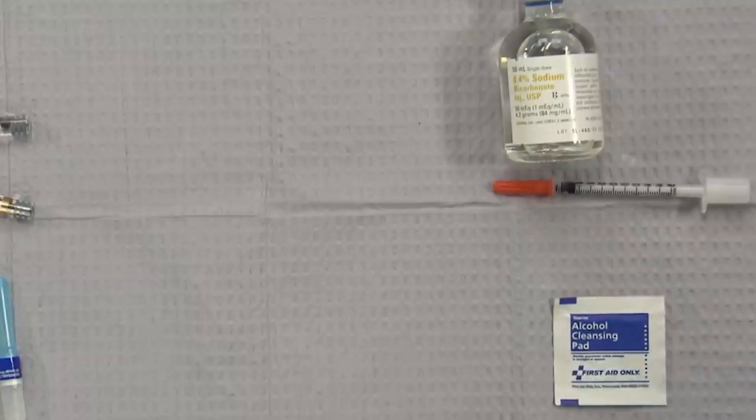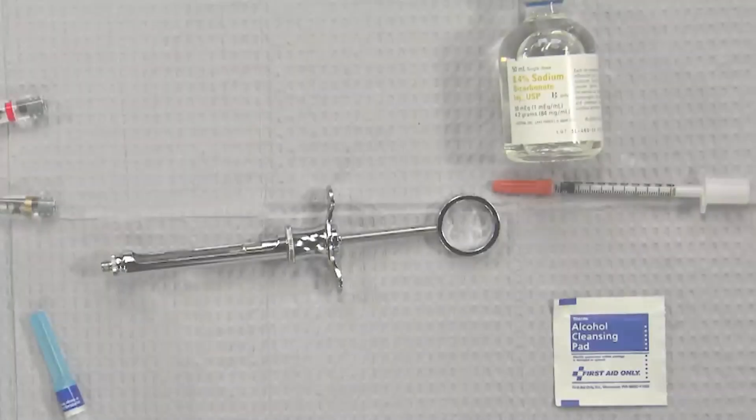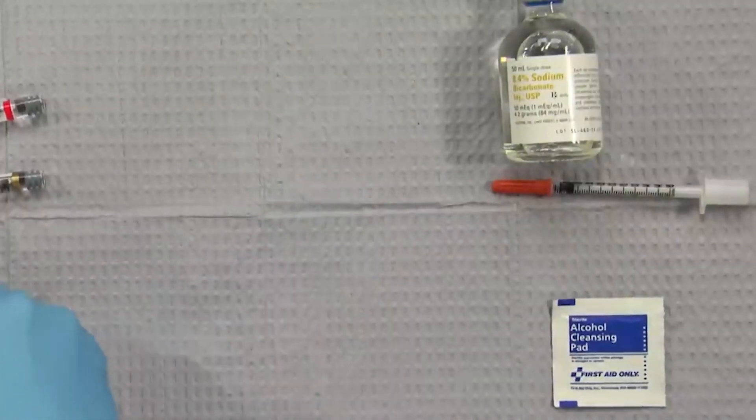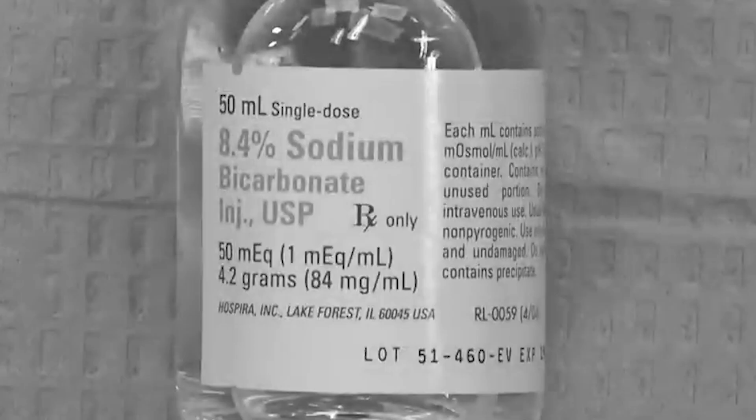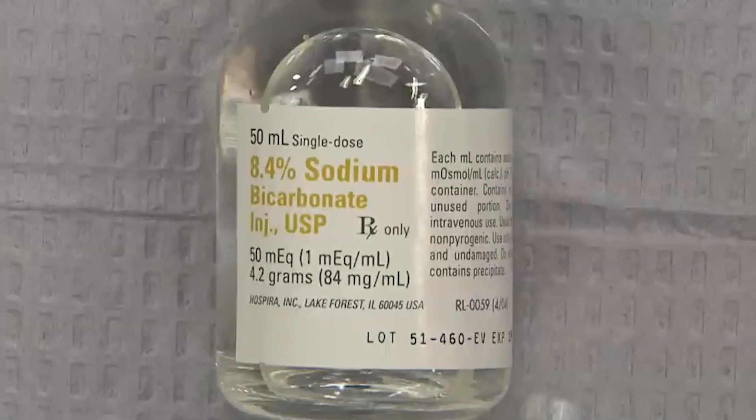So what are we going to need to buffer our local anesthetic for our patient prior to them getting there? The things that you may or may not have in your practice are going to be the main star, which is the buffering solution itself, which is the 8.4% sodium bicarbonate. It comes in a 50 ml vial.